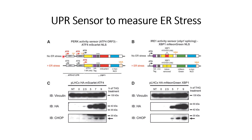In non-stress conditions, translation starts from open reading frame one and open reading frame two, but not from open reading frame three. Translation begins at ORF1 and ends at the end of ORF1, and similarly for ORF2. The mScarlet or NLS signal is not translated, so there is no red fluorescence signal in the cells under non-stress conditions.